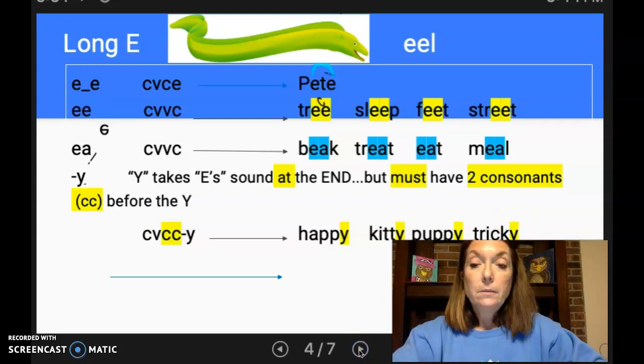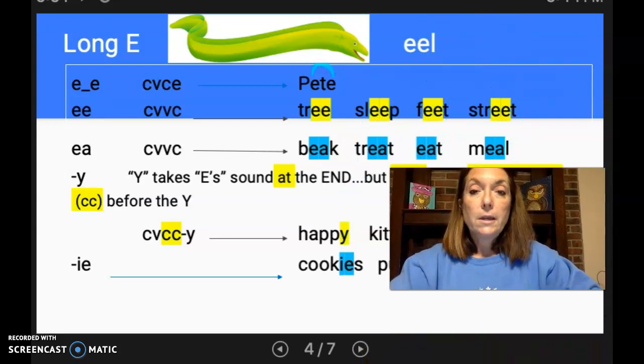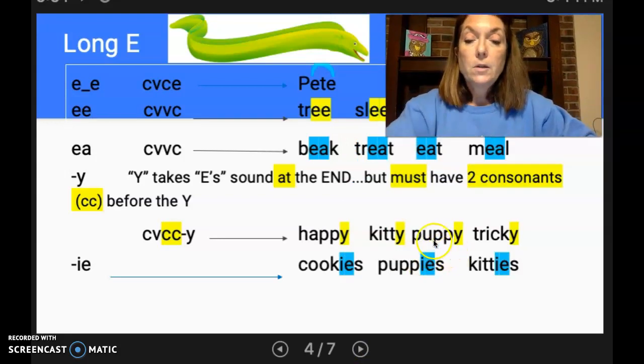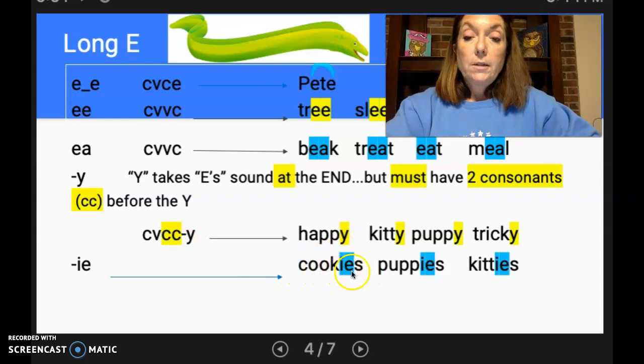Our next spelling, and I am going to move my picture again so you can see that. So you can see those now a little bit better. And now we have IE at the end of a word. And IE is when I have taken my Y and changed it. And this one had to change it to an I before I could add an ES to make that mean more than one puppy. So we have cookies, puppies, and kitties.